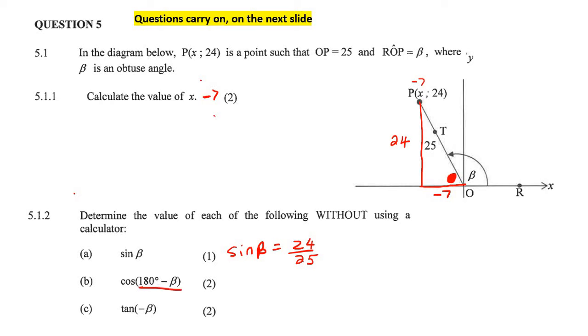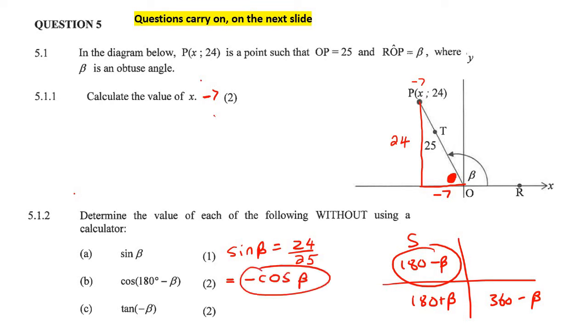Next one, cos 180 minus beta. So we need to use our CAST diagram first. So we know that this is always 180 minus beta, this is always 180 plus beta, and this is always 360 minus beta. So we have 180 minus beta, so we've got that, but cos is negative in that quadrant. Remember, this is the quadrant where sin is positive, so this is going to end up becoming negative cos beta. If you're confused right now, you need to go back and go over your reduction. So that's just going to be negative cos beta.